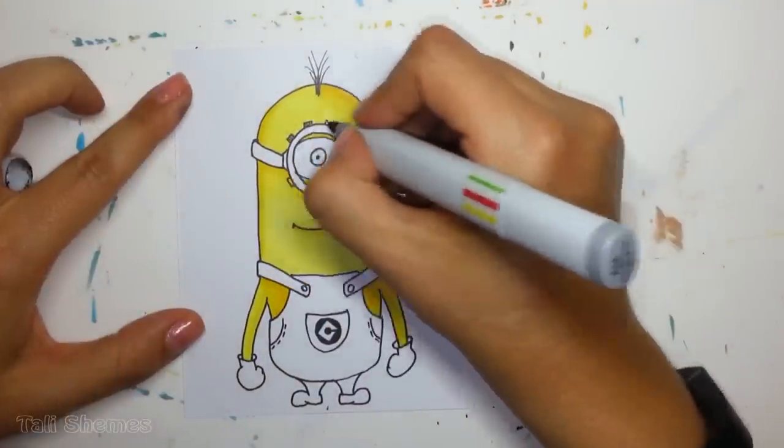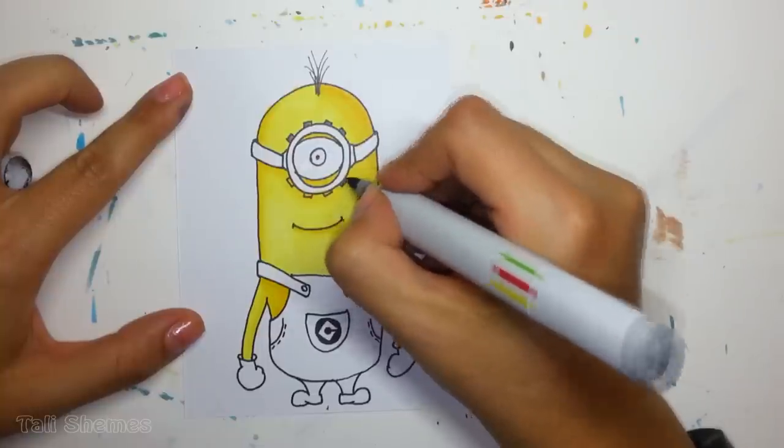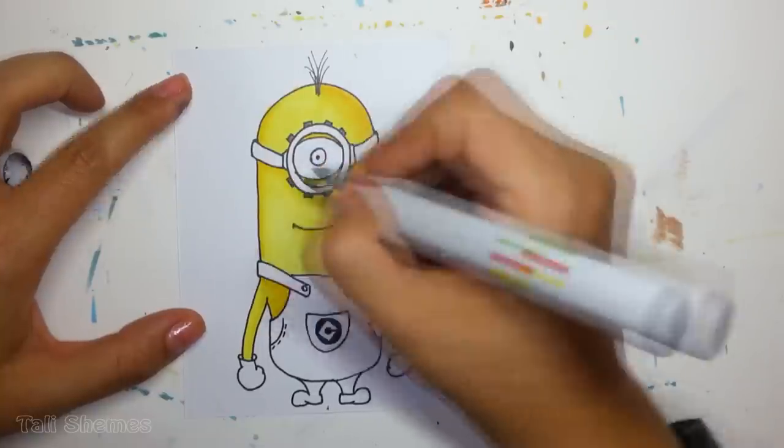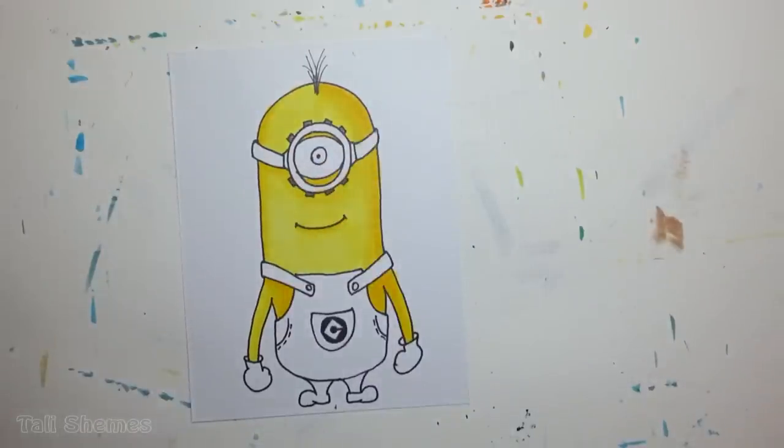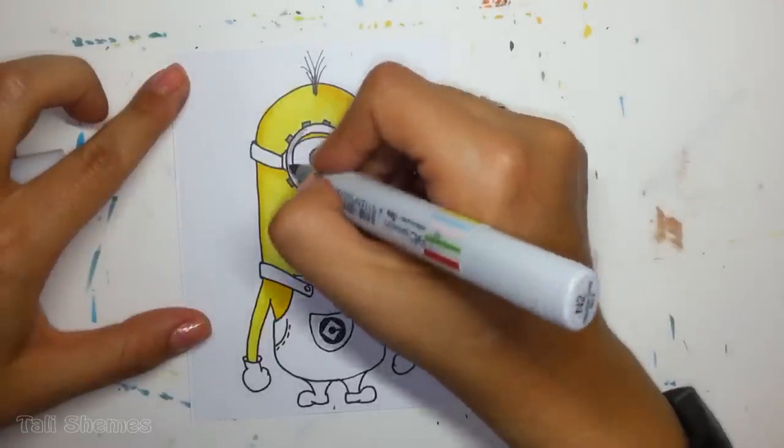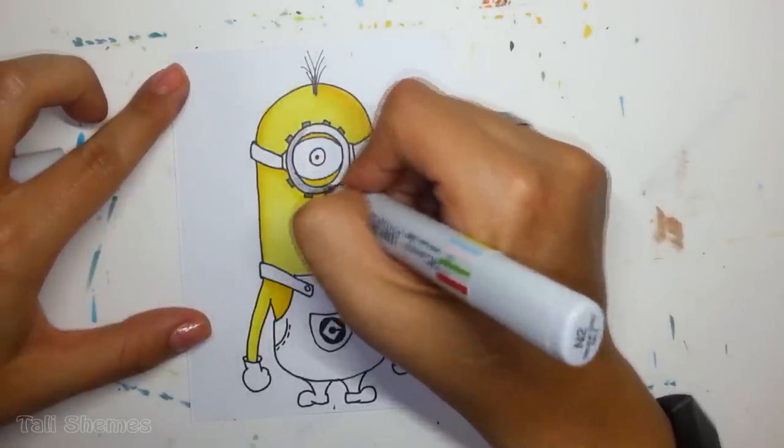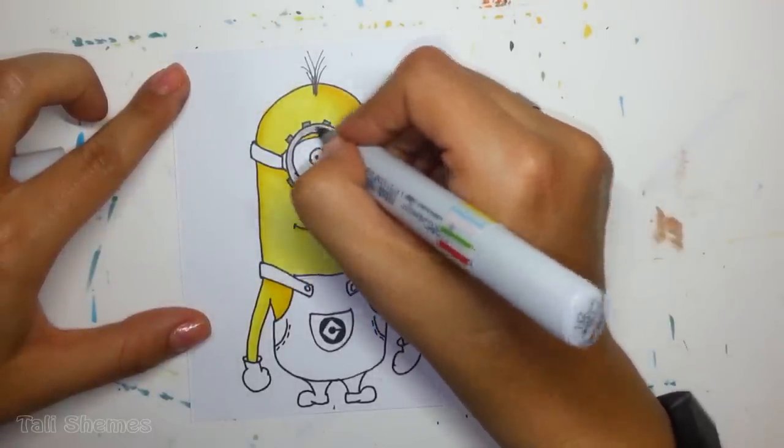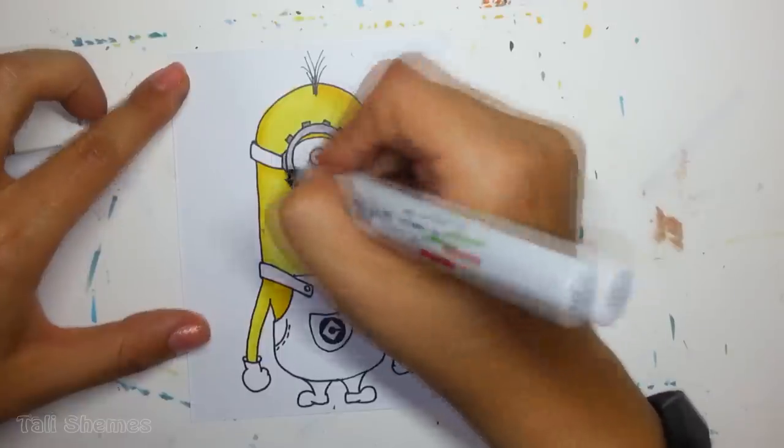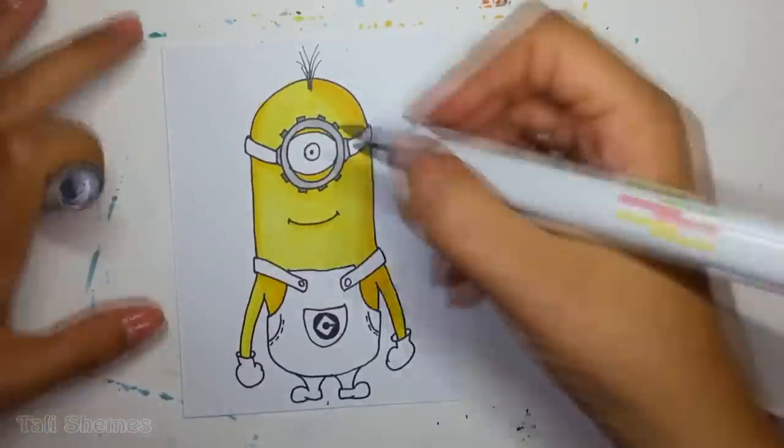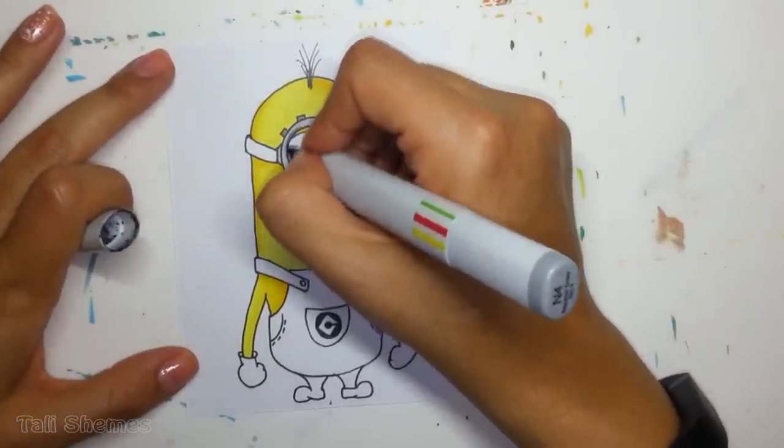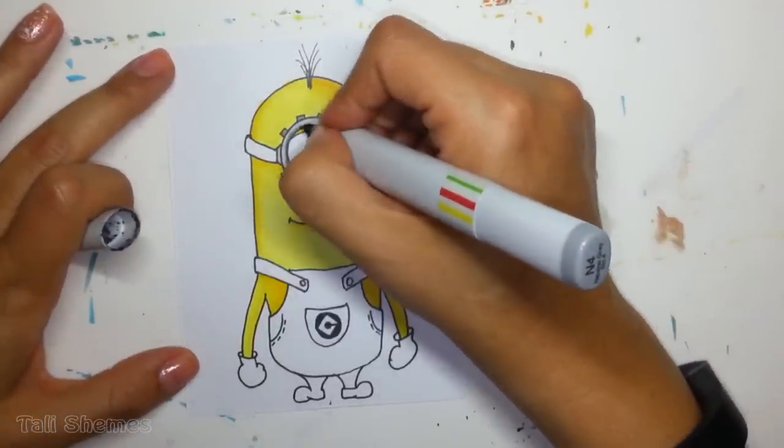I'm coloring the screws of the goggles with N4. I'm not gonna do any blending there because it's too small. For the round part of the goggles I'm using N2 as my lightest color and N4 as the darkest, then going in with N0 to blend the colors together and give them a smooth look.